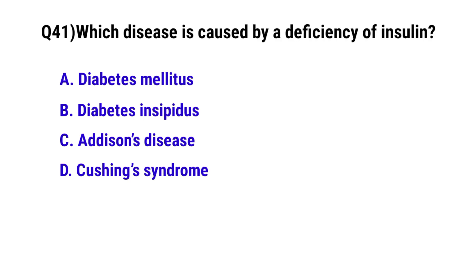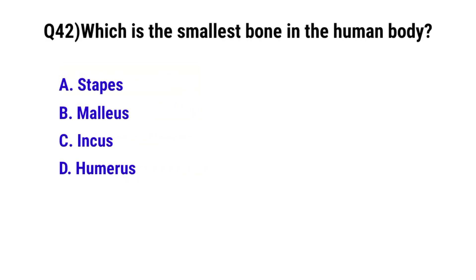Question number 41: Which disease is caused by a deficiency of insulin? The correct option is A: Diabetes mellitus. Question number 42: Which is the smallest bone in the human body? The correct option is A: Stapes.